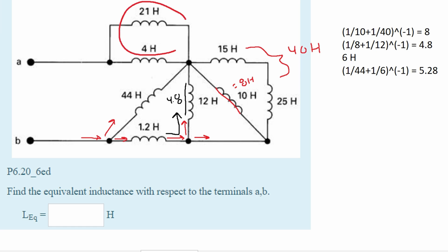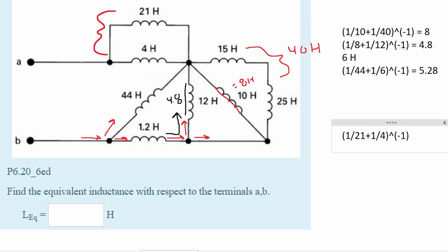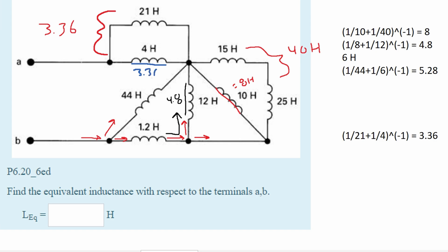Lastly we have this part up here. We can see that both of these inductors are in parallel, so plugging into the parallel formula we get 3.36 Henrys. So this inductor is equivalent to 3.36 Henrys, and the section we just calculated is equivalent to 5.28 Henrys. We now have 5.28 and 3.36.